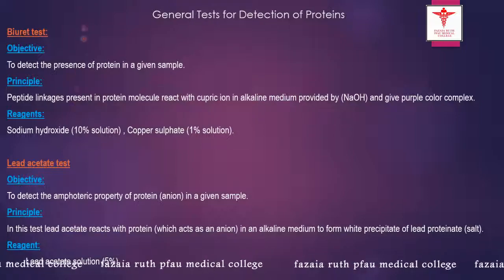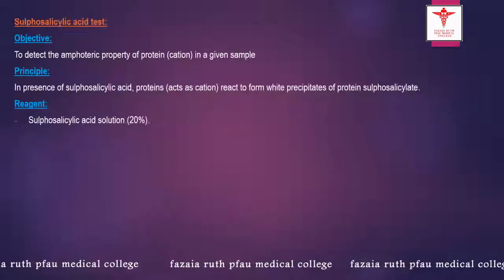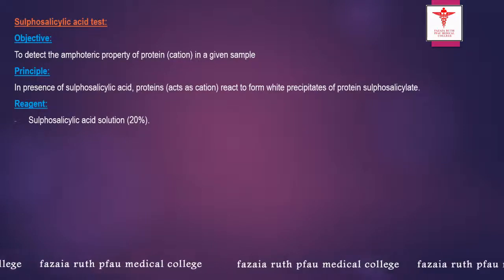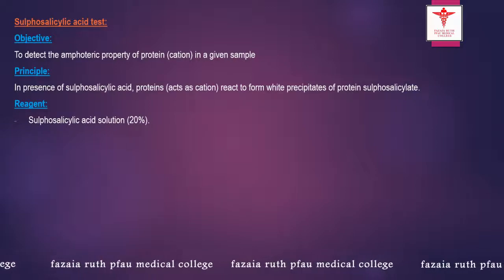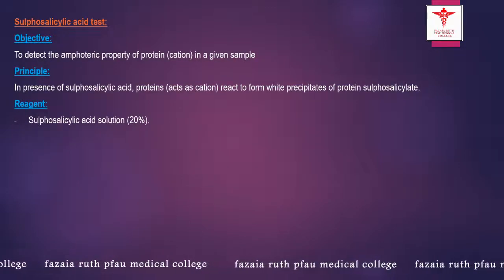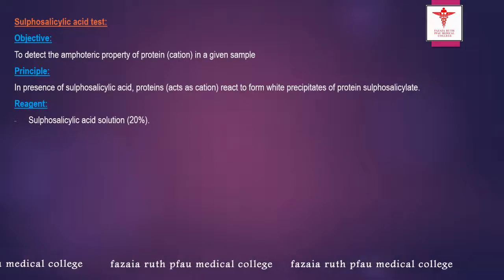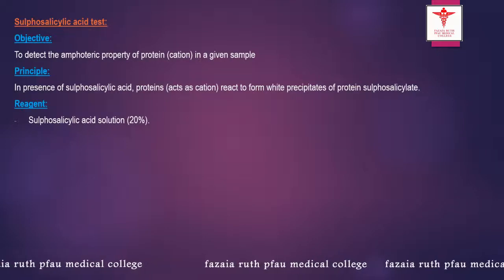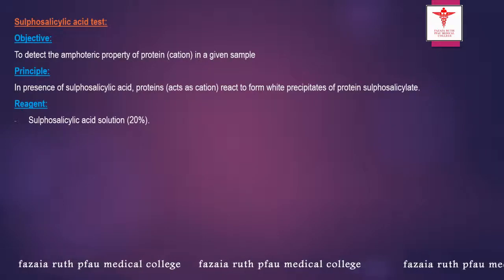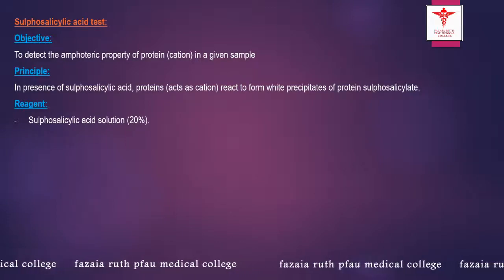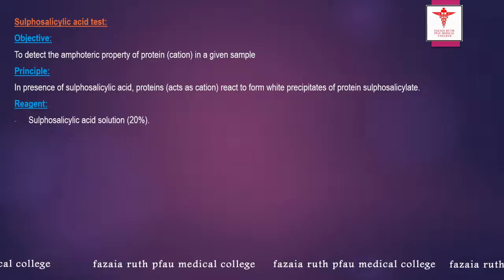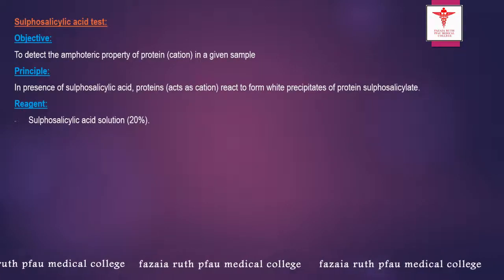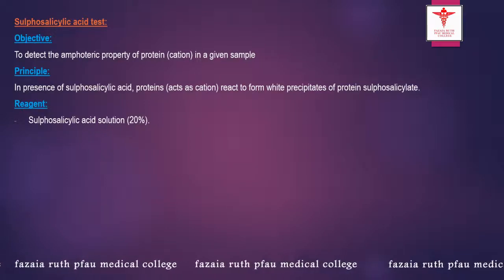The third test is the sulfosalicylic acid test, done to detect the amphoteric property of protein — specifically the cationic part in a given sample. Proteins acting as cations react to form a white precipitate of protein sulfosalicylate. The main reagent is 20% sulfosalicylic acid solution.